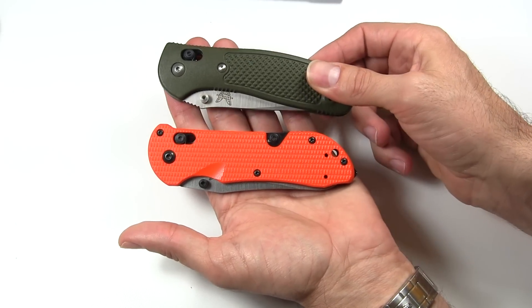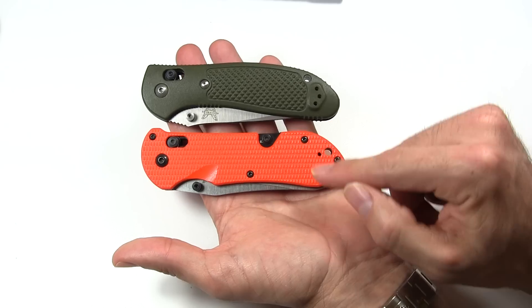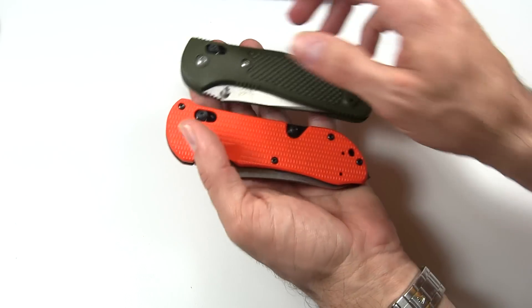So the Griptilian, overall, closed length, 4.62 inches. The Triage, a little bit longer, 4.7 inches.